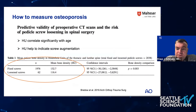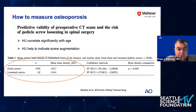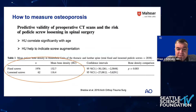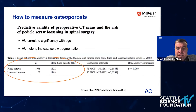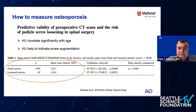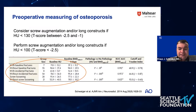Furthermore, when you correlate Hounsfield units with screw loosening, you will see that if Hounsfield units are below 120–115, there is a high risk of loosening screws. Hounsfield units correlate with age and help you indicate when to perform screw augmentation.